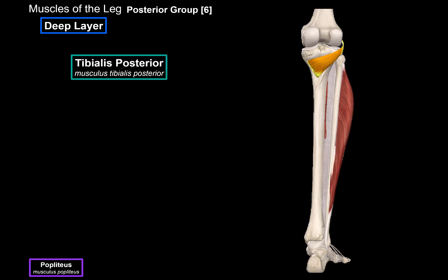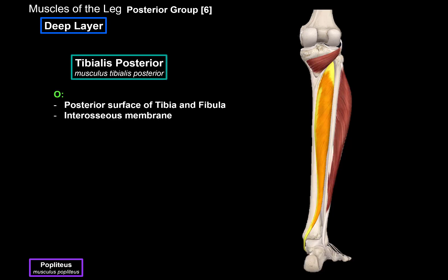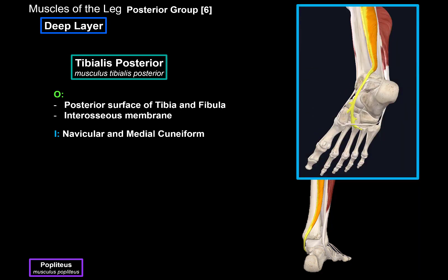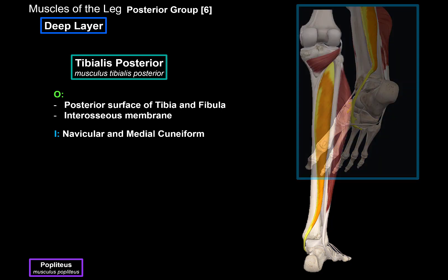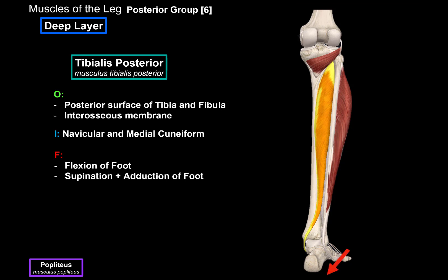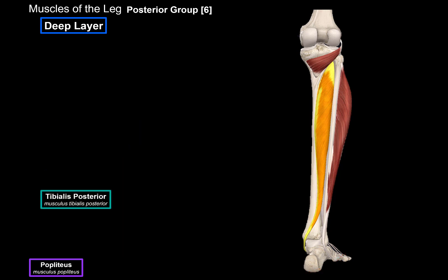Then there's the tibialis posterior. It originates from the posterior surface of the tibia and fibula, as well as the interosseous membrane. It inserts at the navicular and medial cuneiform on the plantar surface. Most flexor muscles end up on the plantar surface of the foot. This muscle is going to flex the foot and also supinate and adduct the foot.